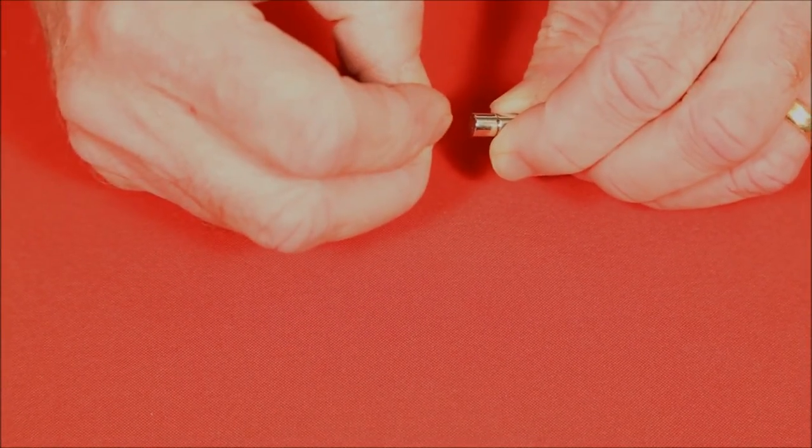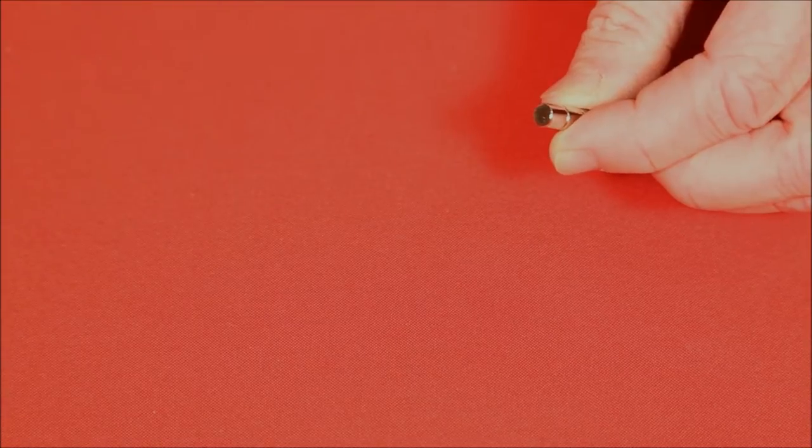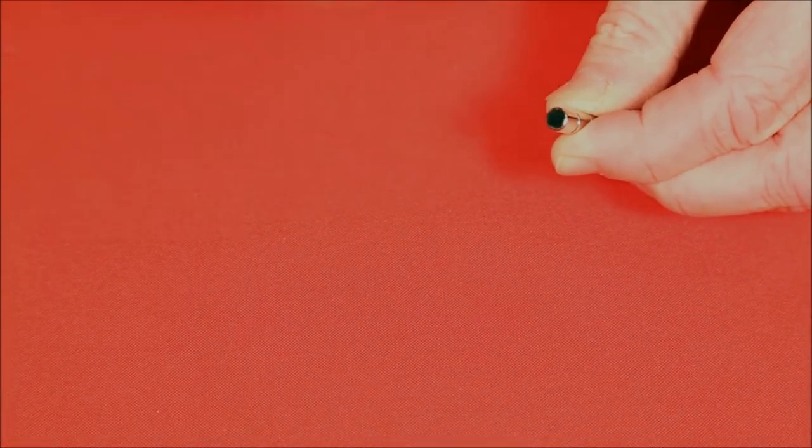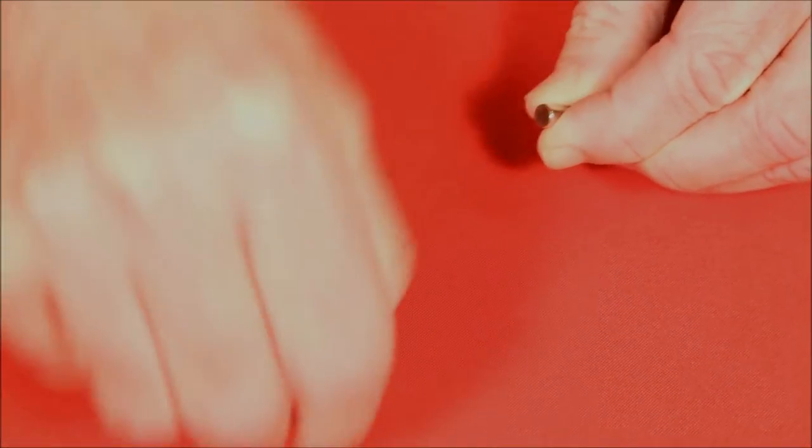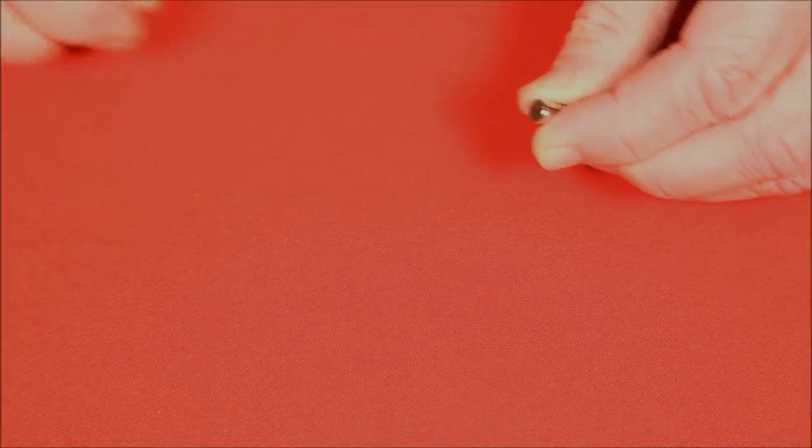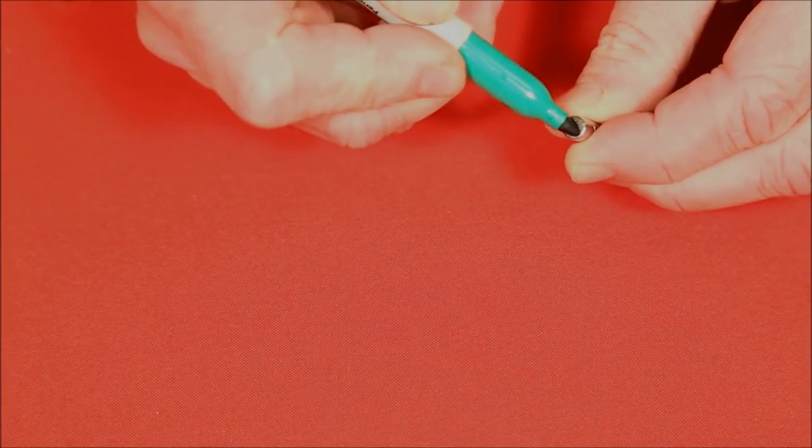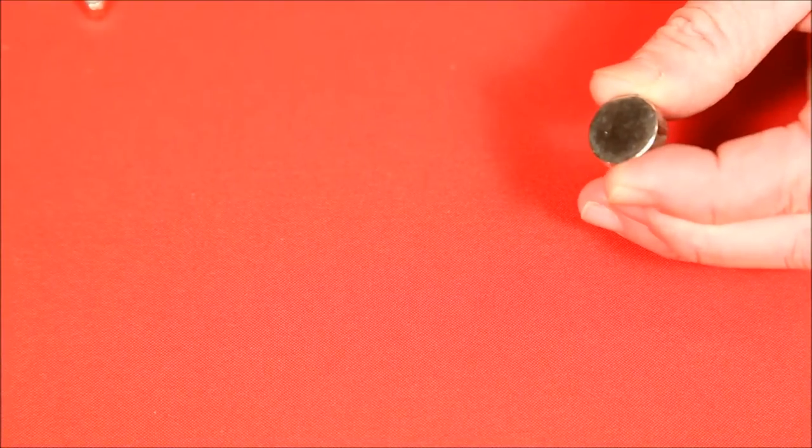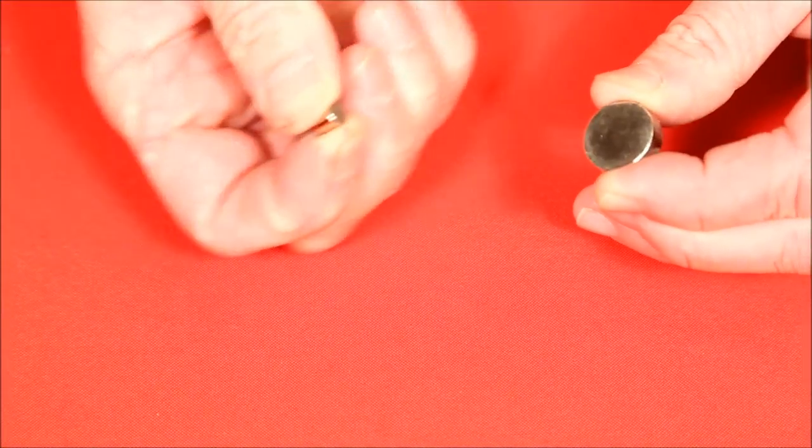So place it on there. If you feel it repelling, you know that this is the same polarity as the one you colored green. Go through and color them all and repeat it with the two larger magnets.